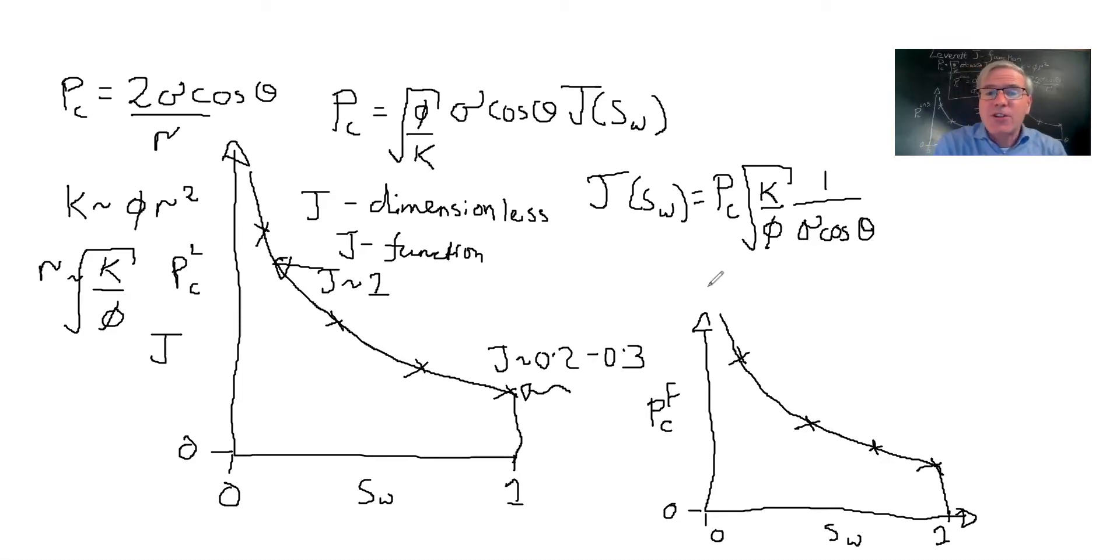Then what we can do is the J function can be written here with PC_lab with lab values, but it's also equal to the J function we would find using field values. Now, normally between the field and the lab, if we're looking at oil-water, we assume that cosθ is about 1. And so cosθ is the same in both cases. If we're dealing with a mercury system, there is a distinct contact angle and we look at σcosθ as a package.